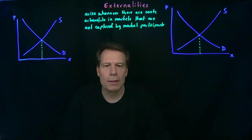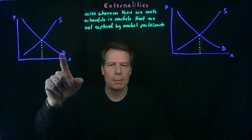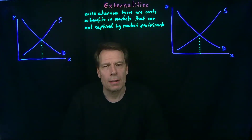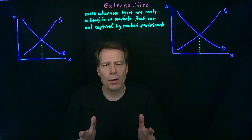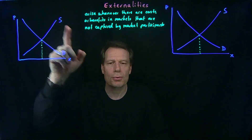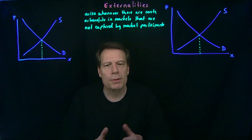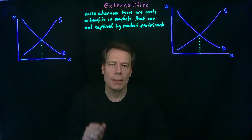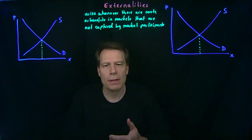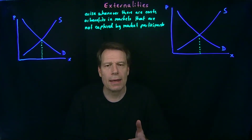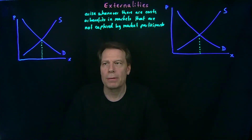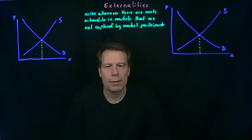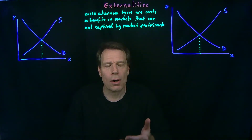The market participants are the households that form the demand curve and the firms that form the supply curve. So far we've assumed that all the benefits and costs to society are captured in those two curves. But suppose, for example, that there's a production process that the firms use that creates pollution which is harmful to people who breathe the air. In that case, there are non-market participants — people who are not buying or selling in that market — who are incurring costs from the pollution.